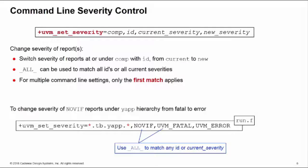We build a hierarchical path name down to our YAP component, use a wild card to pick up all of the components under the YAP hierarchy, specify our ID as no_VIF, and we want to change the current severity of fatal to a new severity of error. Note that we could use _all_ in either the ID or the current severity arguments to match any ID or any current severity.